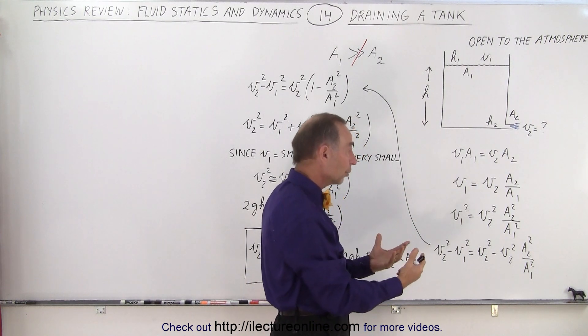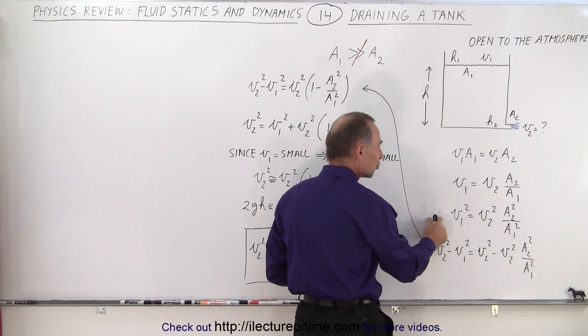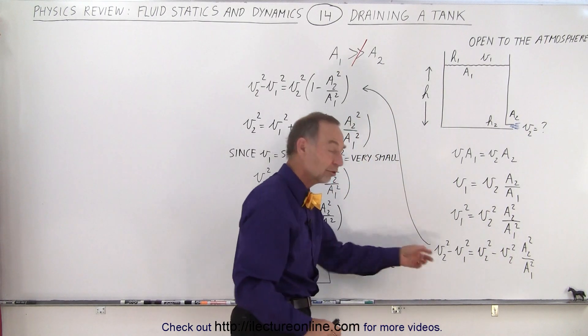Then we square both sides, and then at that point we take v2 squared and subtract the left side and v2 squared and subtract the right side. So we end up with this equation right here.